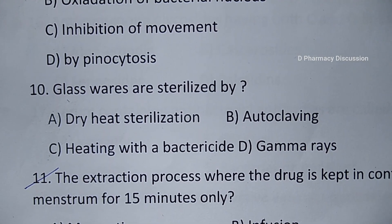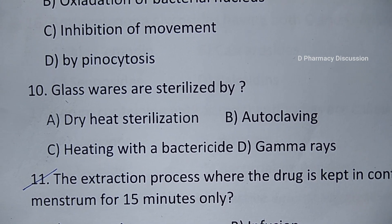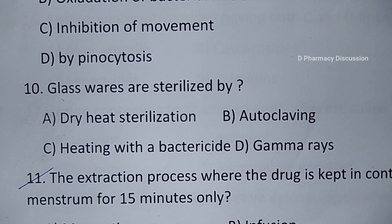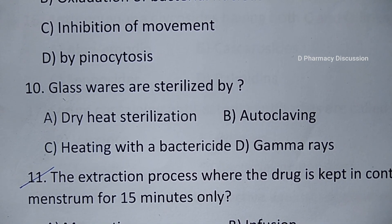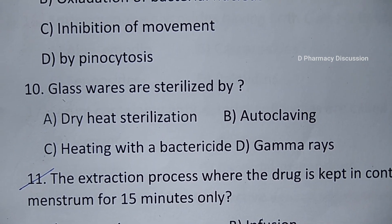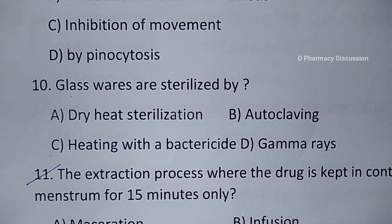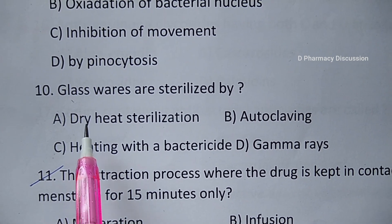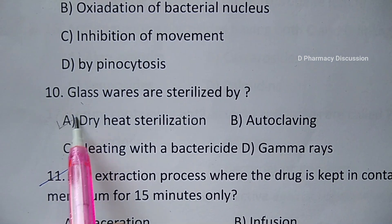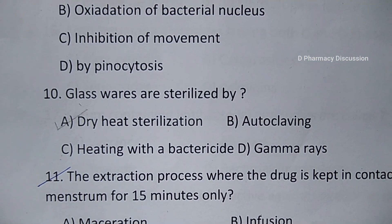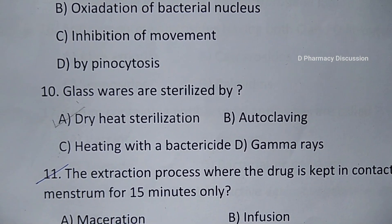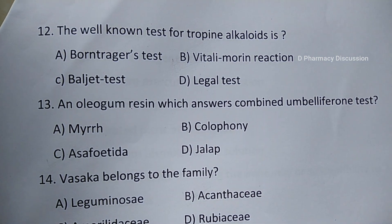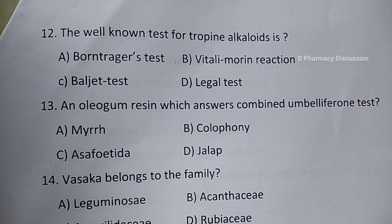Question number 10: glass wares are sterilized by — option A. Dry heat sterilization, B. Autoclaving, C. Heating with a bactericide, and option D. Gamma rays. Correct answer is option A, that is dry heat sterilization.